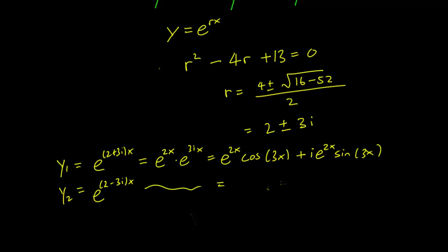And in the same way, this other solution can be written down as e^(2x) cosine 3x minus i e^(2x) sine 3x.